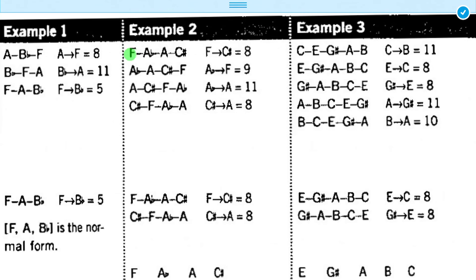You can see this in action in example 2. We have a set F, A flat, A, C sharp. If we look at all the rotations, we see the boundary intervals of 8, 9, 11, and 8. So, that means that we have two sets that have the smallest boundary interval. We have a tie between F, A flat, A, C sharp, and C sharp, F, A flat, A.